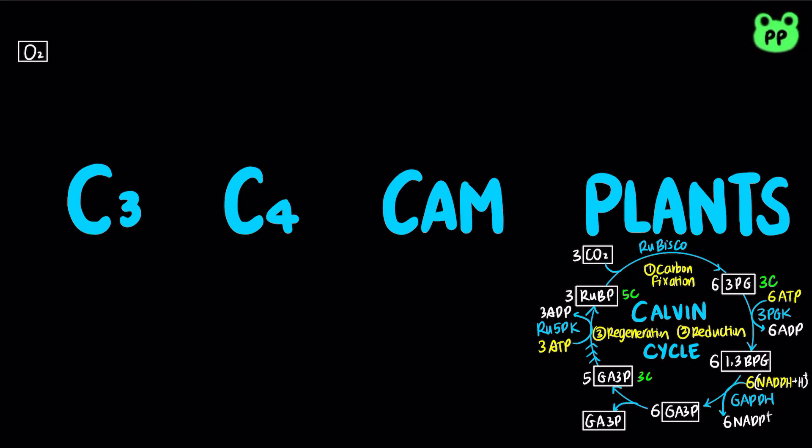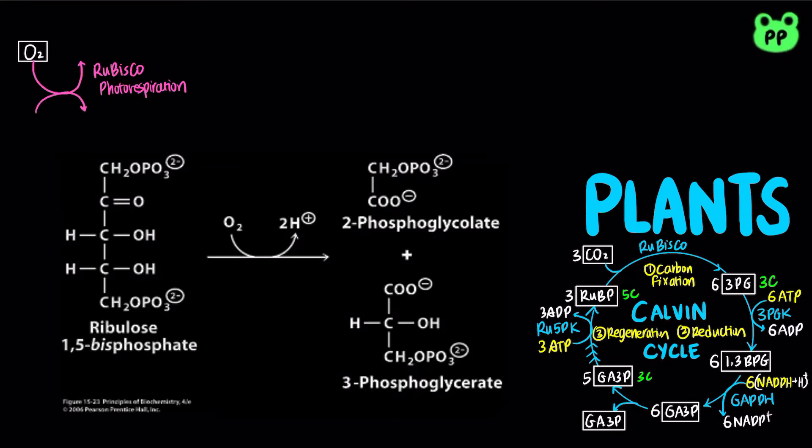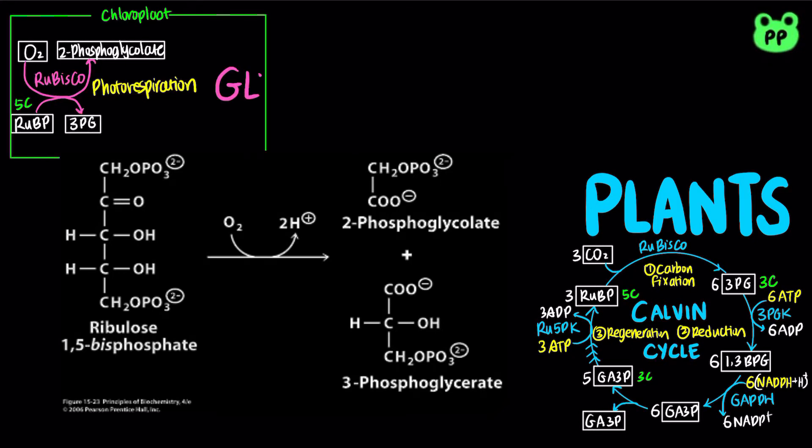Photorespiration is a costly side reaction of photosynthesis. The enzyme RUBISCO is not absolutely specific for carbon dioxide as a substrate. RUBISCO can also condense molecular oxygen with ribulose-1,5-bisphosphate to form 3-phosphoglycerate and 2-phosphoglycolate. 2-phosphoglycolate is a metabolically useless product, which requires a costly salvage pathway known as the glycolate pathway to be reconverted back into carbon dioxide.